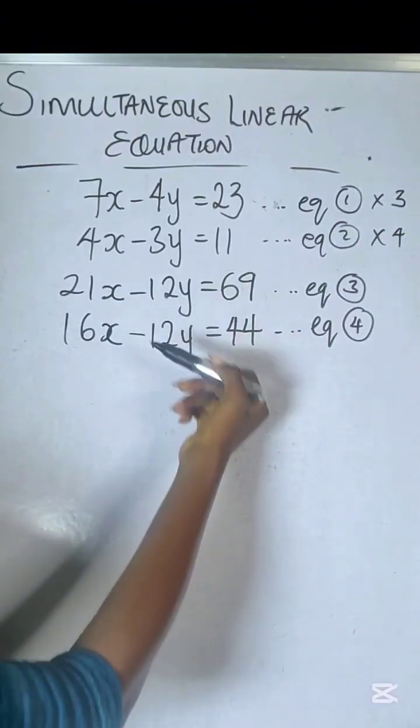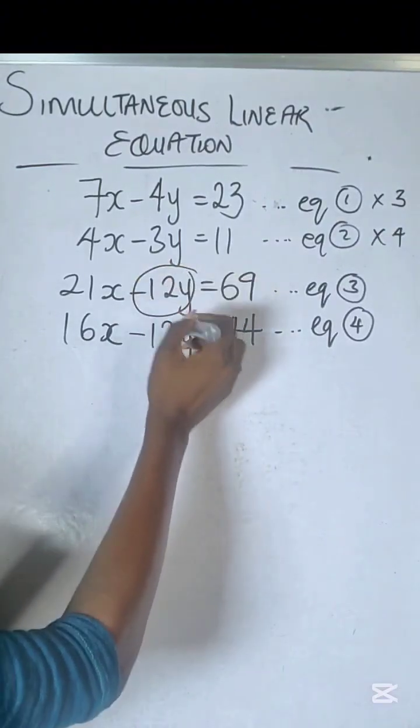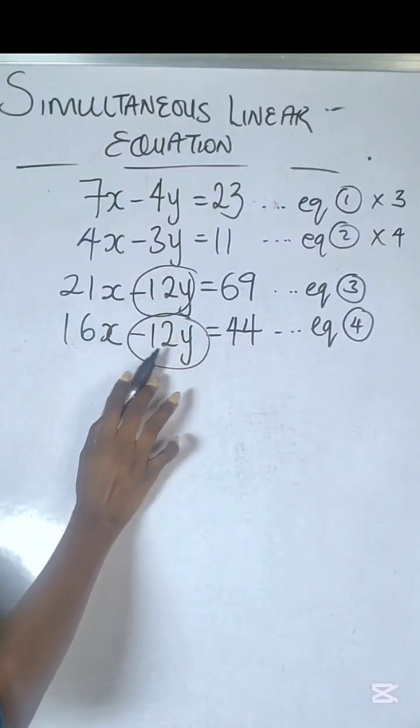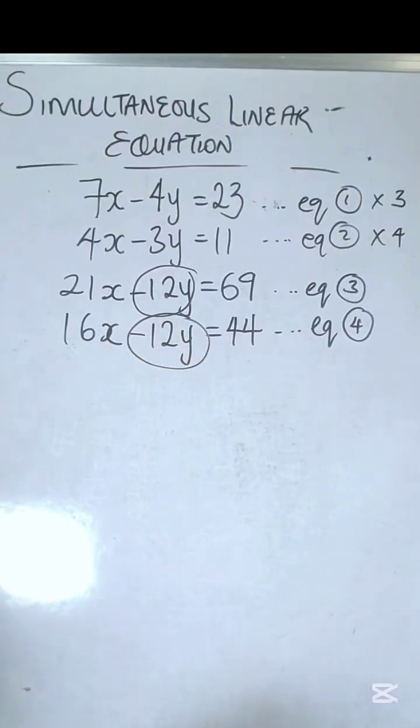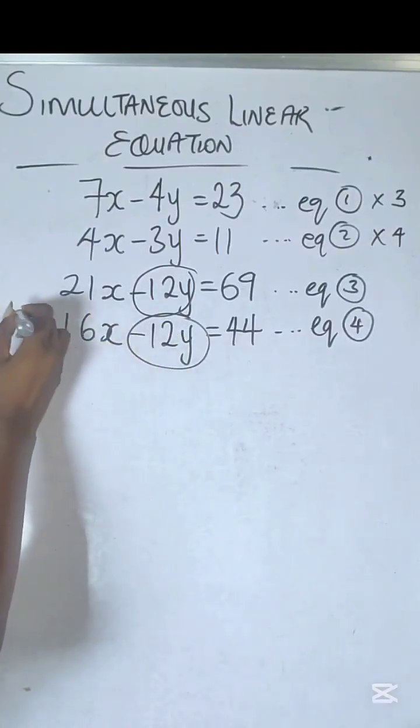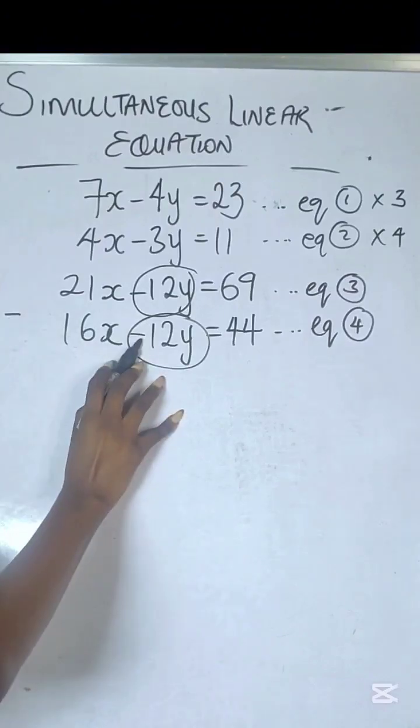We want to make sure that we cancel out one variable—that was why we did this. -12y minus -12y, how do we make sure it becomes zero? By subtracting both equations. Therefore, minus and minus is plus, so +12y minus 12y becomes zero.